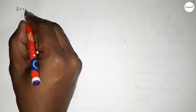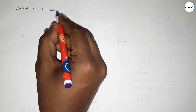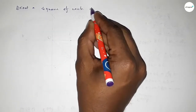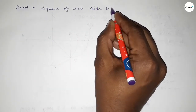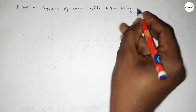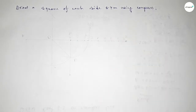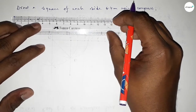Hi everyone, welcome to Essay Share Classes. Today in this video we have to draw a square of each side 6.4 centimeters by using a compass. So let's start the video.